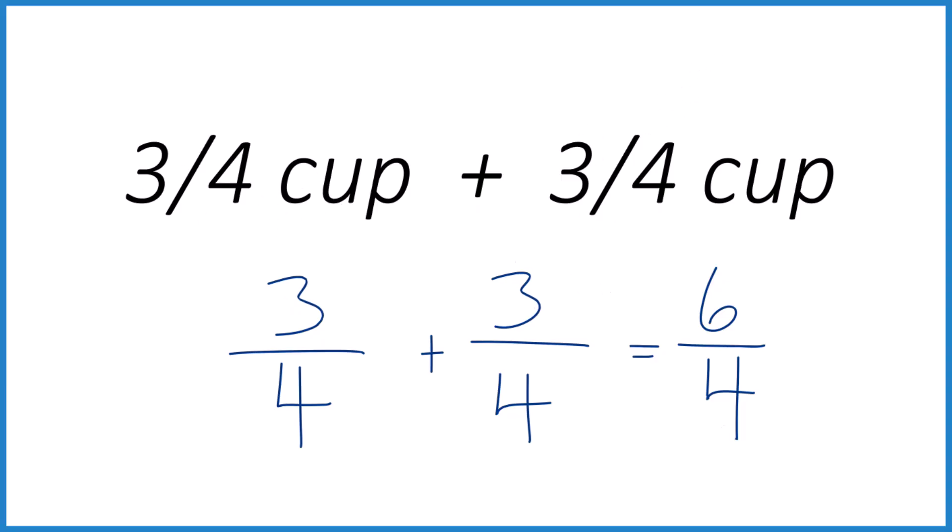And 3 fourths cup plus 3 fourths cup, that's going to give us 6 fourths of a cup. This is an improper fraction, the numerator here is larger than the denominator, so let's change it to a mixed number.